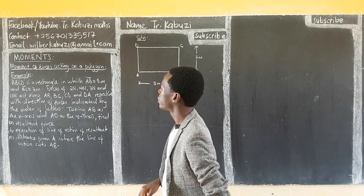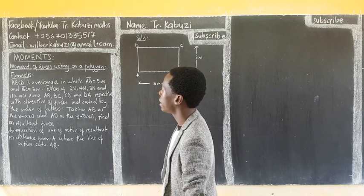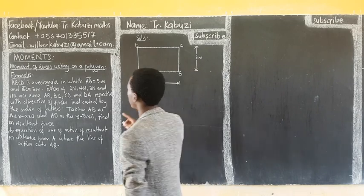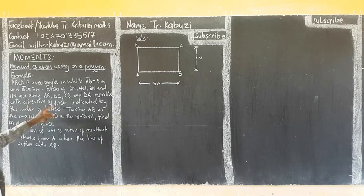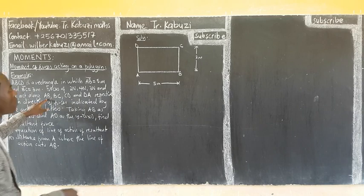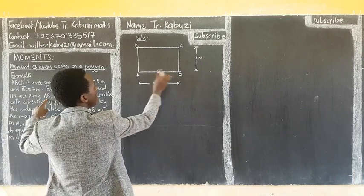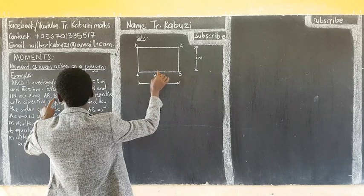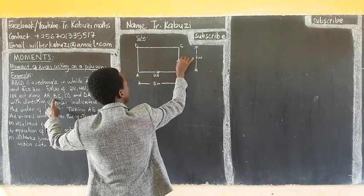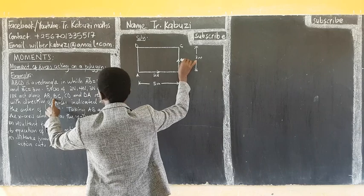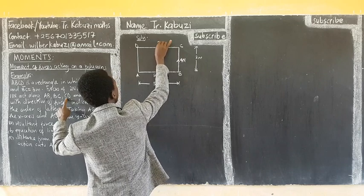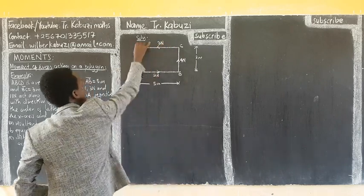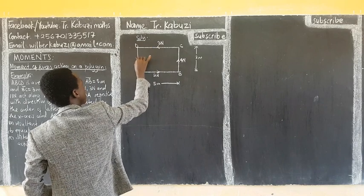Okay, forces of 2 Newton, 4, 3, 11, along AB, BC, CD, and DA respectively, with directional indicators. So AB goes with 2, AB goes with 2 Newtons. Then BC goes with 4. Then CD goes with 3 Newtons. Then DA, so this is the direction DA, 11 Newtons.